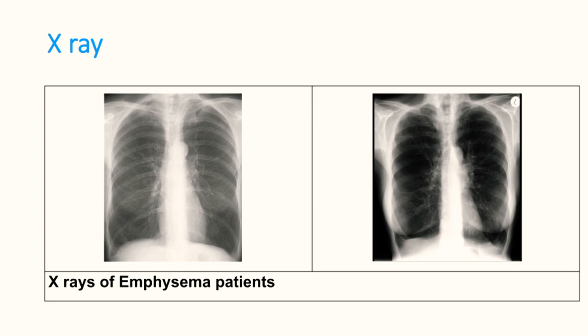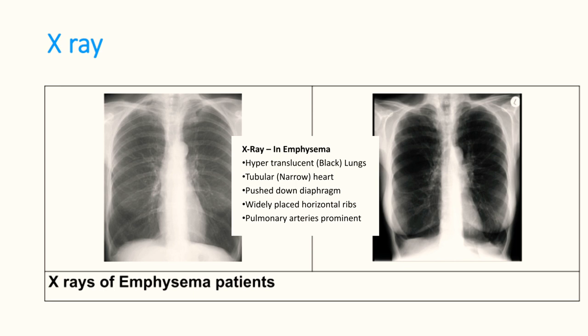Cardiac dullness is obliterated, liver dullness shifts down, and breath sounds are vesicular but reduced; wheezes with crepitations may be present. Patients with chronic emphysema are classically called 'pink puffers' due to polycythemia secondary to hypoxemia — erythropoietin rises, leading to polycythemia. On X-ray, emphysematous patients show hypertranslucent lungs, tubular heart, pushed-down diaphragm, and horizontally placed ribs.